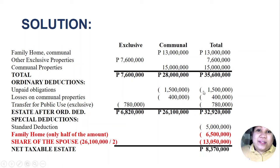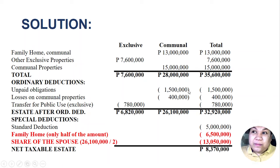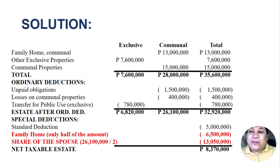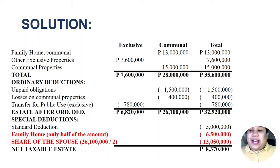The reason our net taxable estate is lower here is that in the previous solution, only 10,000,000 was deducted for the family home since it was exclusive, leaving the excess 3,000,000 as part of the net taxable estate. But in this assumption, the entire 13,000,000 family home is fully deducted — 6,500,000 as the family home deduction and the other 6,500,000 as the share of the spouse. That's how you compute the share of the surviving spouse. Always remember: the share of the spouse is the communal estate after deducting ordinary deductions, divided by 2.